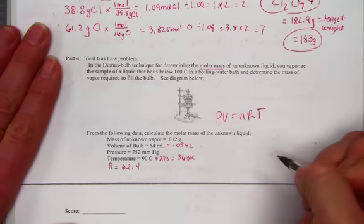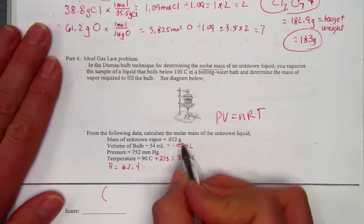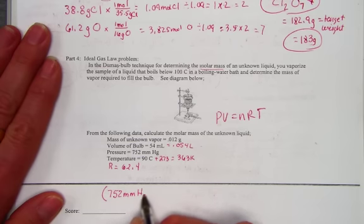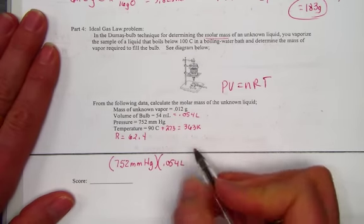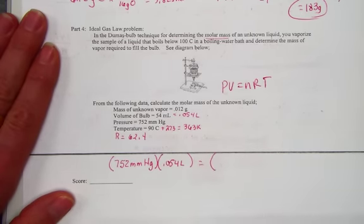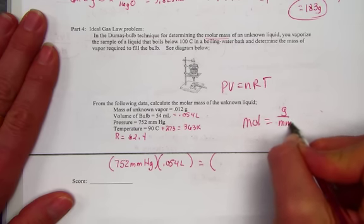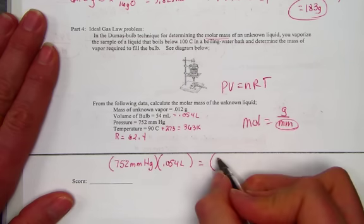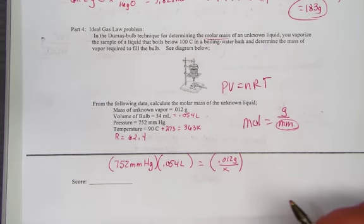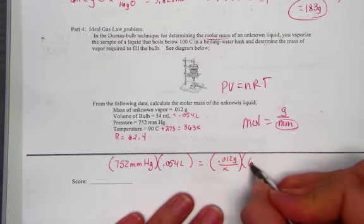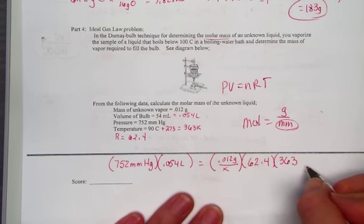Hidden in the n variable is the molar mass. So here's what we know if PV equals nRT. Pressure given to us is 752 mmHg. Volume is 0.054 liters. N is the number of moles, and to substitute in, if moles equals grams over molar mass, that's our target variable. So I'll place in for the n variable 0.012 grams over x, where x represents the molar mass of our gas. R is our constant, 62.4, and the temperature in kelvin is 363 K.